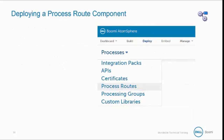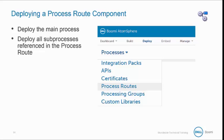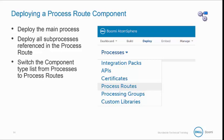To deploy a process route component, on the Deploy tab, deploy and attach to the desired environment and atom the main process. Deploy all subprocesses referenced in the process route. Switch the component type list to process route and then deploy the process route component.